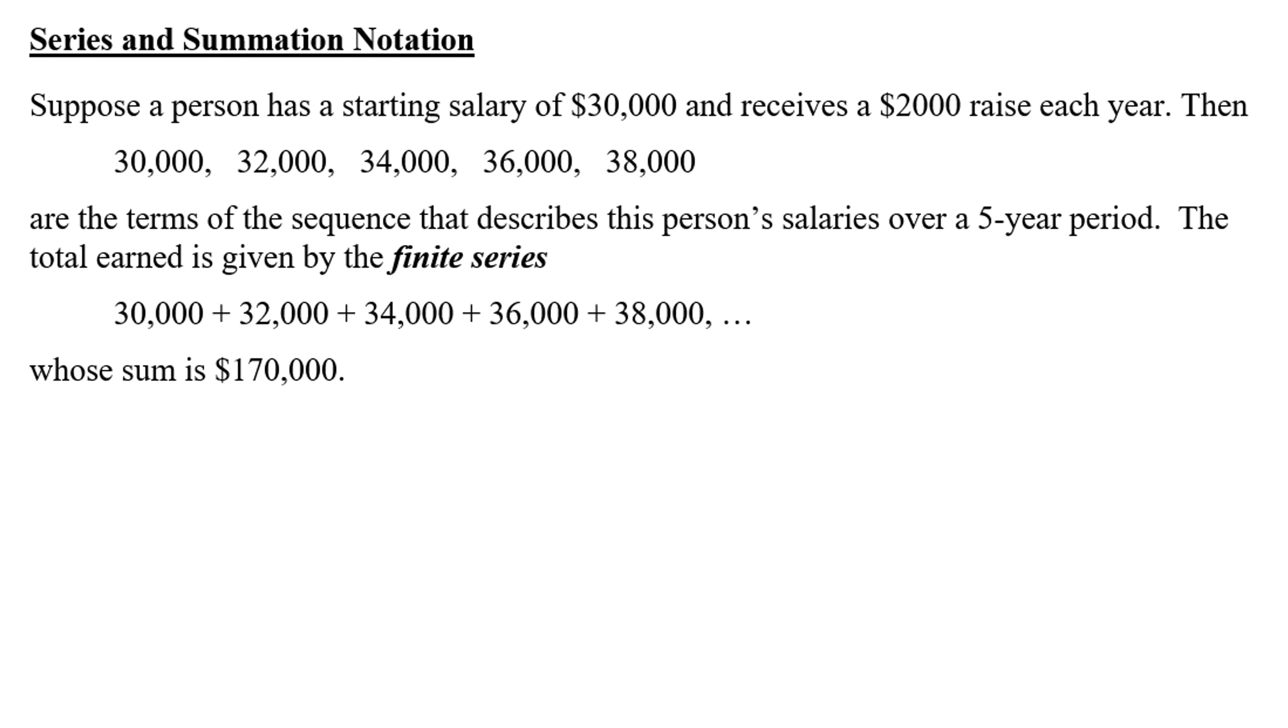So if we want to find their total earnings, we'll call that a finite series - finite because it's ending at five. Now we add those all up. So this is a sequence, that's your list, then a sequence becomes a series once we start adding them together.